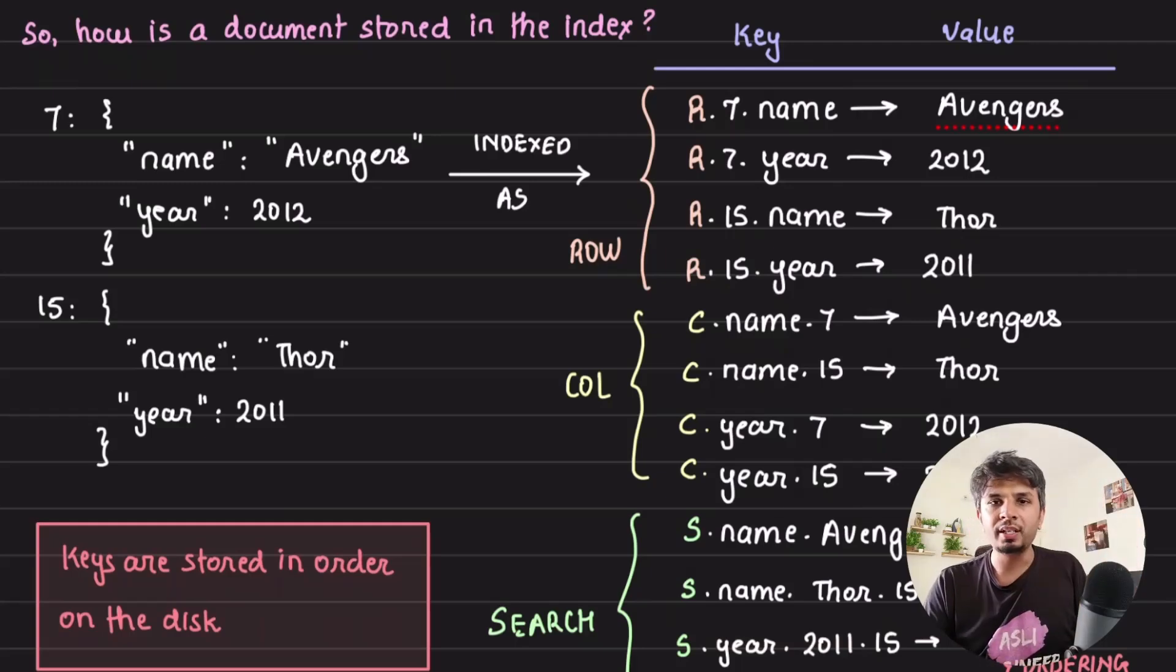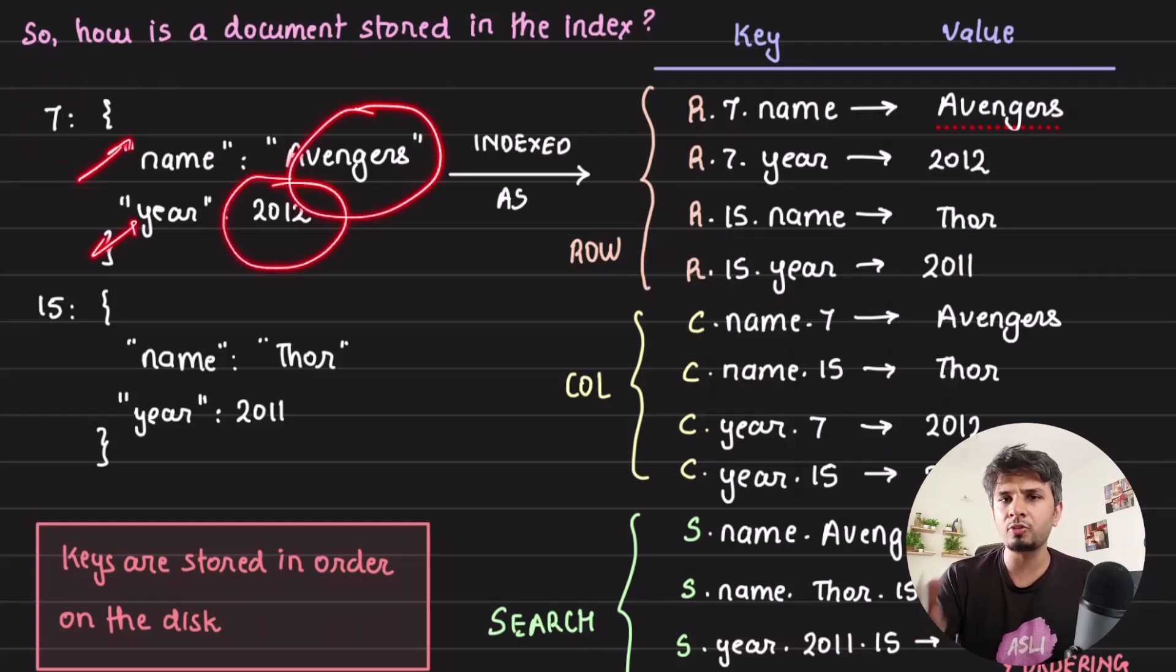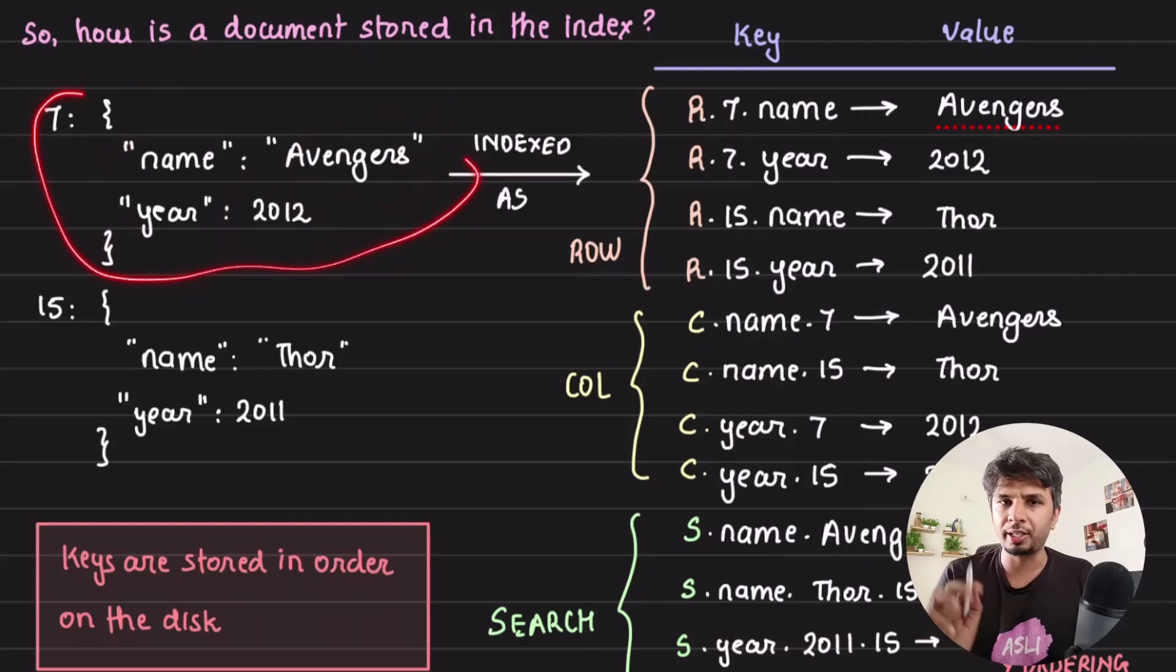When they insert a document, this document does not go as is in RocksDB. Each document that you ingest is stored multiple times in multiple different ways in this index because it needs to make it efficient for all types of queries. So let's say I have a document with ID 7, which is a movie document having a name and a year. The name of the movie is Avengers, the year was 2012. This is my document that I'm ingesting.